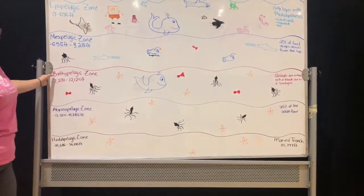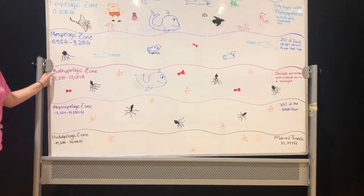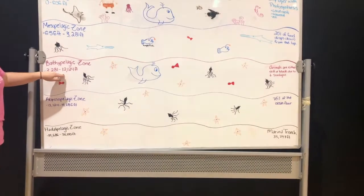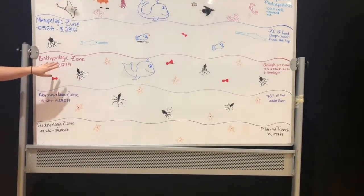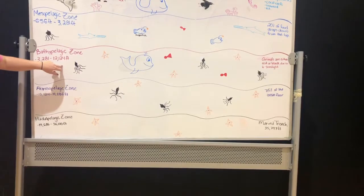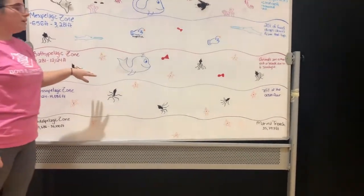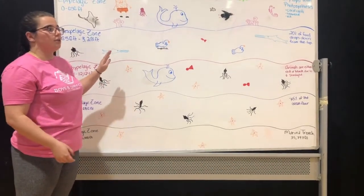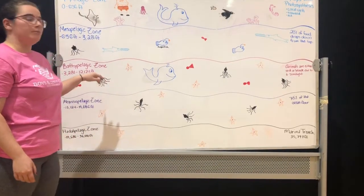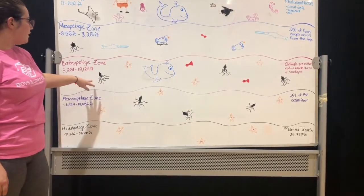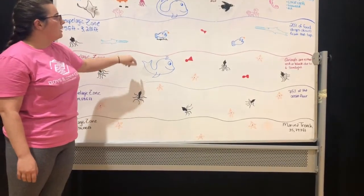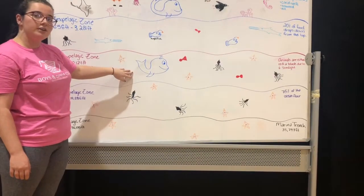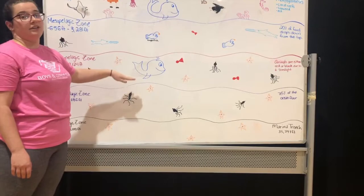And then we're gonna fall down to our next layer, the third layer. This one is gonna be the bathypelagic zone and this one is at negative 3,281 feet and it's gonna go down to 12,124 feet. Down here there's almost no sunlight, so this is where a human would be blind. Because of this low level of sunlight, most of the fish down here are gonna be red or black. We're also gonna have invertebrates again like the squid and starfish, and sperm whales can dive down this far to search for food, but this is about as far down as they can get.